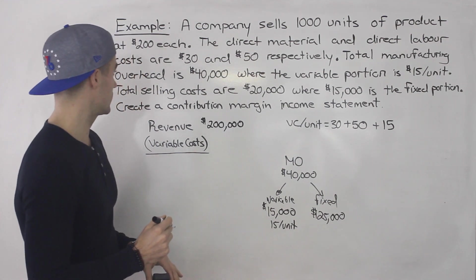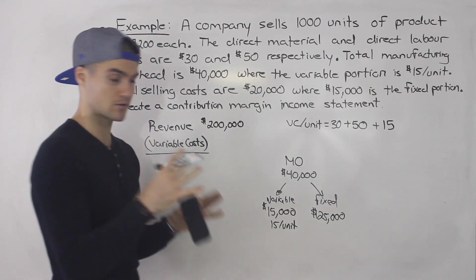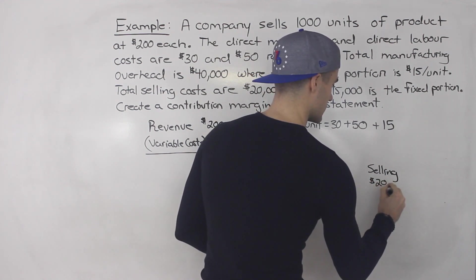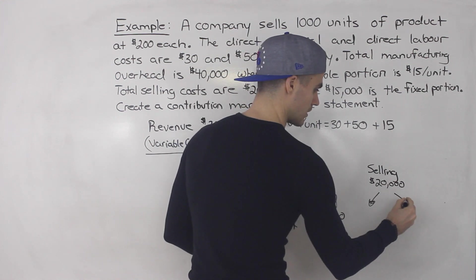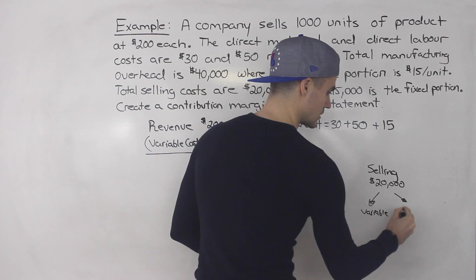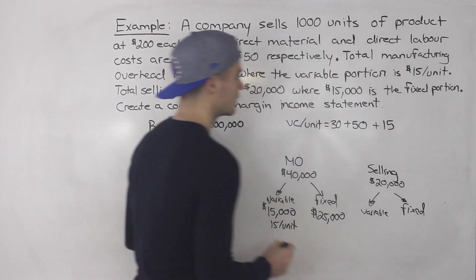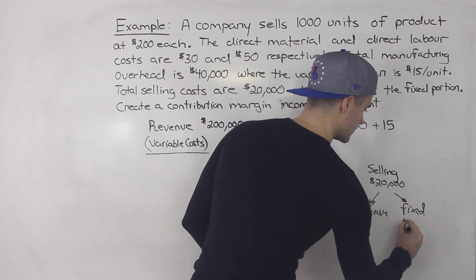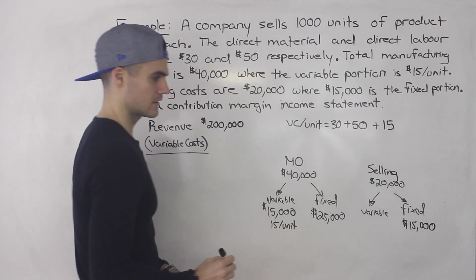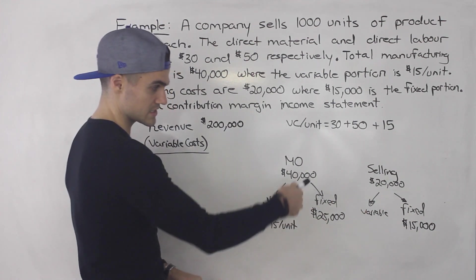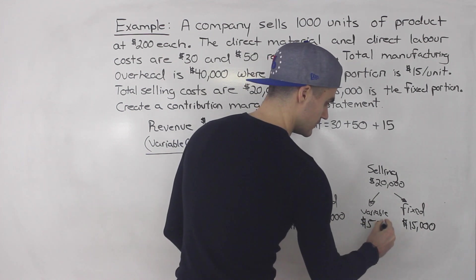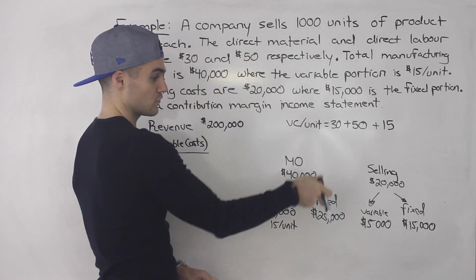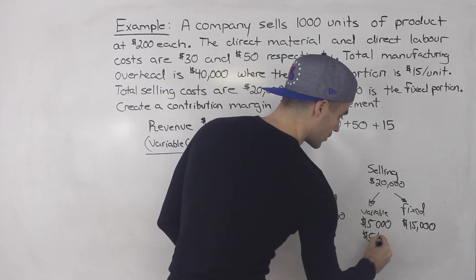We're also told the total selling costs are $20,000 — that's a period cost. Period costs are split into a variable portion and a fixed portion. In this case, the fixed portion of selling costs is $15,000. So the variable portion of selling costs in total is $5,000. On a per unit basis, we take $5,000 and divide by 1,000 units, giving us $5 per unit.